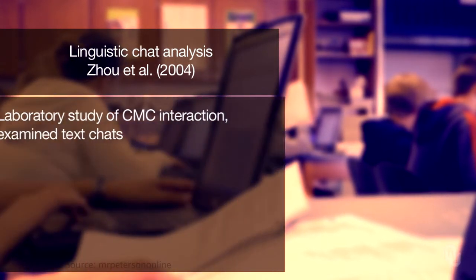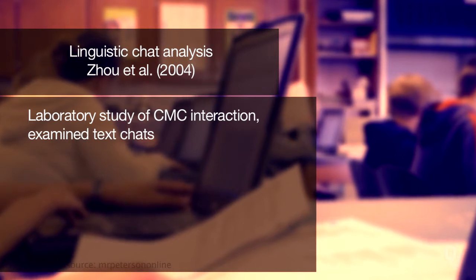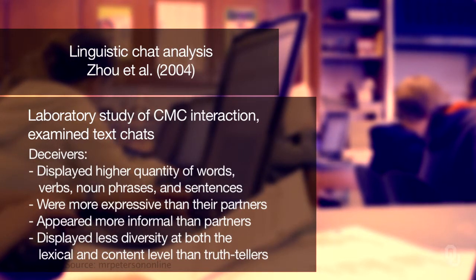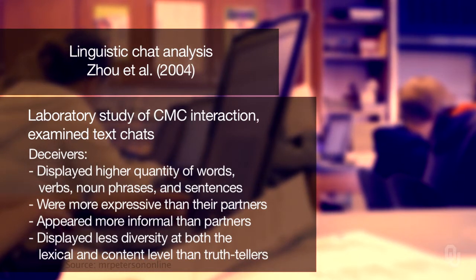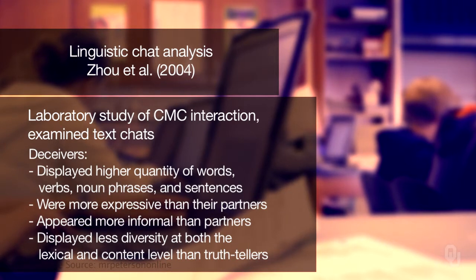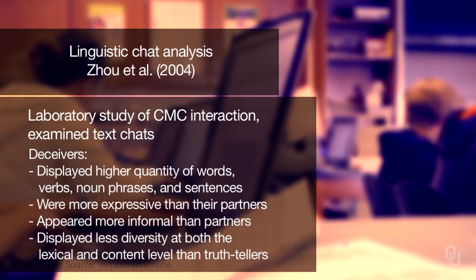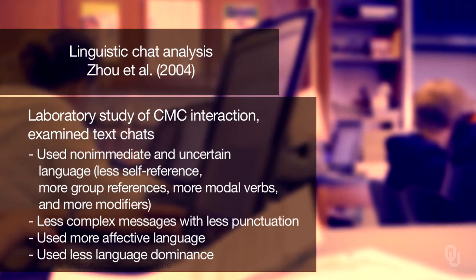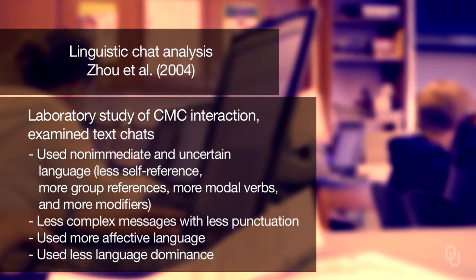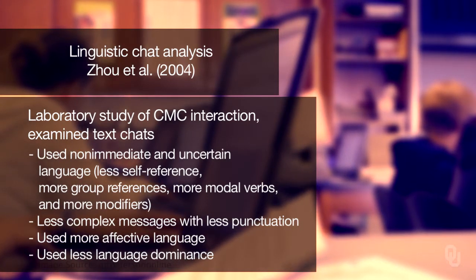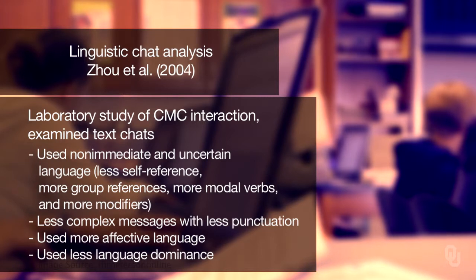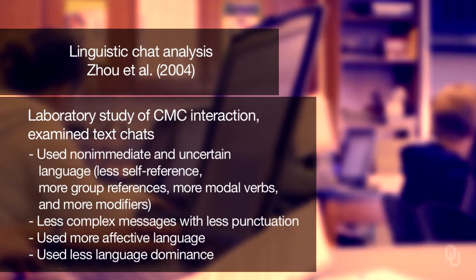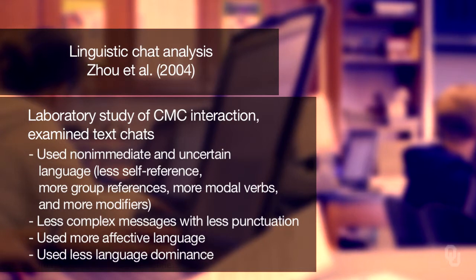Another study on linguistic chat analysis by Zhao et al. in 2004 was a laboratory study of computer-mediated communication examining the text people use in chats. They found that deceivers displayed a higher quantity of words, verbs, noun phrases, and sentences; were more expressive than their partners; appeared more informal; and displayed less diversity at both the lexical and content level than truth-tellers. They also used non-immediate and uncertain language in the form of fewer self-references, more group references, more modal verbs, and more modifiers. Generally, their messages were less complex, with fewer punctuation marks and more pausality, and they used more affective or emotional language with less language dominance, especially at the beginning of the interaction.